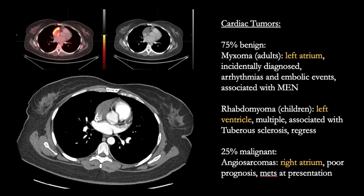25% of the cardiac tumors are malignant, the most common being angiosarcomas like in this patient. The most common location is the right atrium and their prognosis is poor because metastatic disease is frequently present at the time of presentation. Fortunately for this patient, they didn't have any metastatic disease and this right atrial cardiac angiosarcoma was resected.